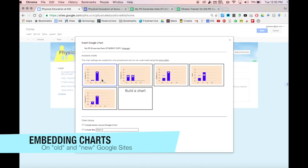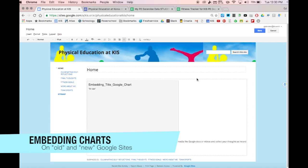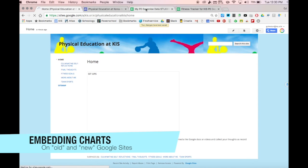So since it's my PE exercise data, I'm going to go select. And then from that, it's going to ask you what chart you want to insert. You can give it a chart name and also some customized width and height ratios, and I'm just going to hit save.